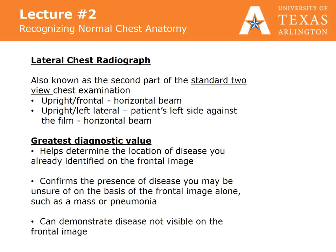Lateral chest x-rays are also known as the second part of the standard view chest examination. In an upright frontal view, you use the horizontal beam. In the upright left lateral view, the patient's left side is against the film, also using the horizontal beam. Lateral chest x-rays help determine the location of disease already identified on the frontal image. They confirm the presence of disease you may be unsure of based on the frontal image alone, such as a mass or pneumonia, and can demonstrate disease not visible on the frontal image.